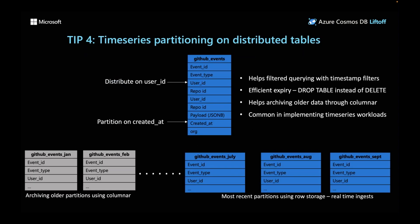Tip four: complement distribution of tables with time series partitioning. In the GitHub events example, I distribute on user ID, but Azure Cosmos DB for Postgres also lets you partition distributed tables. I can create time-based partitions — monthly partitions for GitHub events, such as July, August, September, January, February, etc. Cosmos DB Postgres also lets you archive older partitions using columnar storage format: newer partitions handling real-time ingest are row-based, while older ones are columnar and compressed. Benefits include filtered querying with timestamp filters, efficient expiry by dropping old partitions instead of deleting rows, and efficient archiving using columnar to save storage costs.